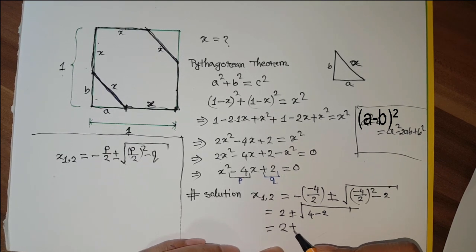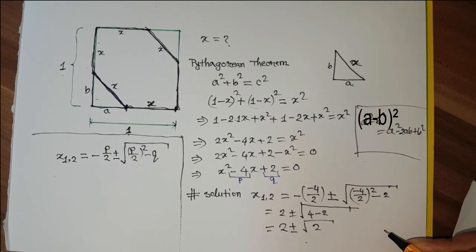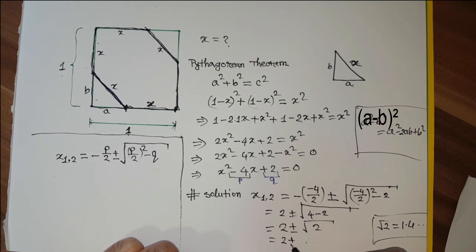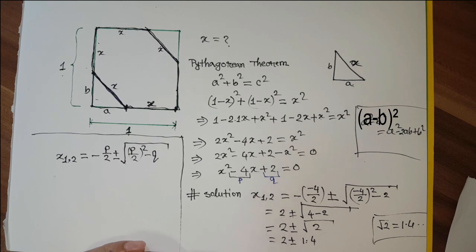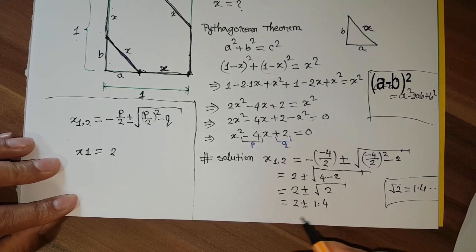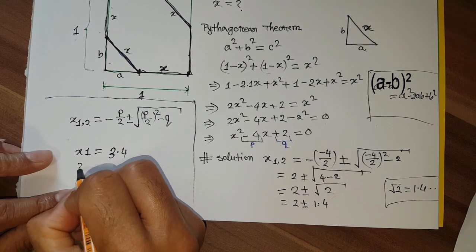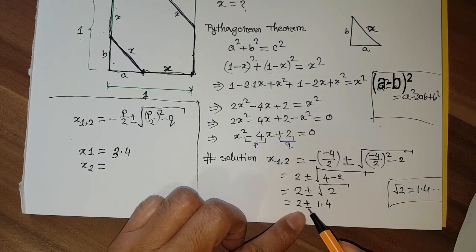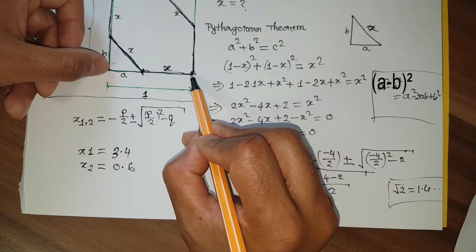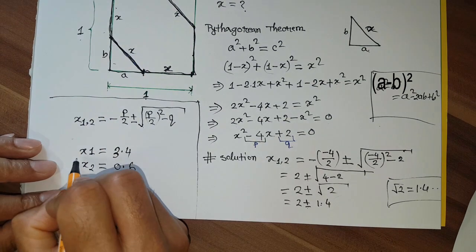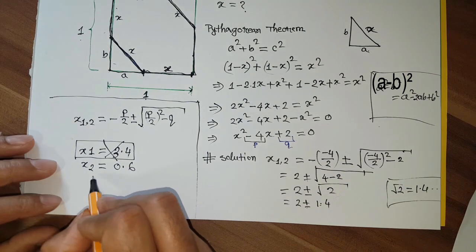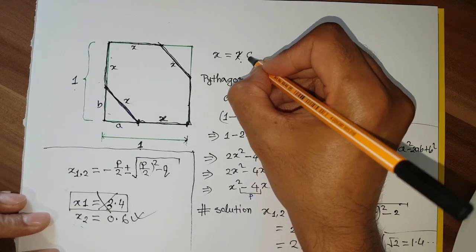So X = 2 ± √2. We know √2 ≈ 1.4, so X = 2 ± 1.4. The first solution is X₁ = 2 + 1.4 = 3.4, and the second solution is X₂ = 2 - 1.4 = 0.6. Since the total side length is 1, X must be less than 1. So X = 3.4 is not valid. Our answer is X = 0.6.